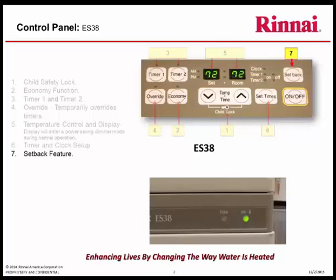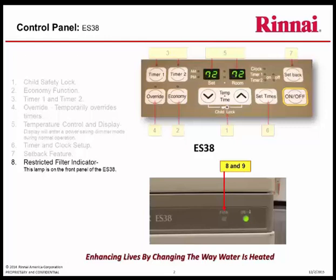Setback feature: this allows for energy savings when no one is present in the structure, or can be used as a frost protection feature. Restricted filter indicator, located on the front panel, lets you know that not enough air flow is passing through its cabinet, which is generally an indication that the air filter has become clogged.